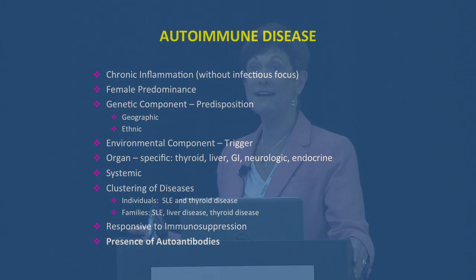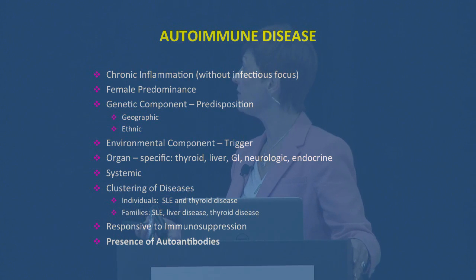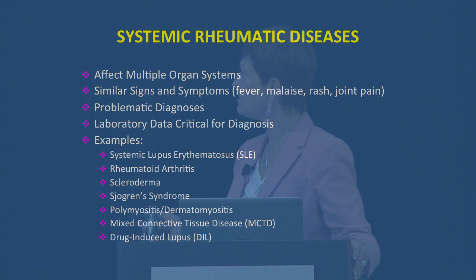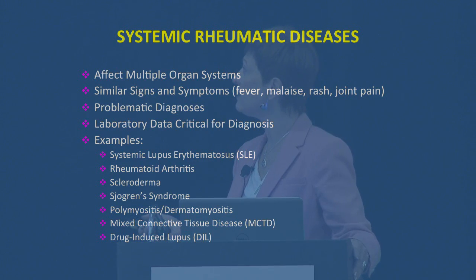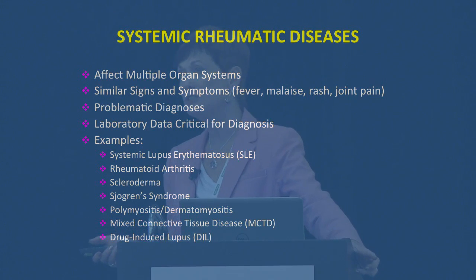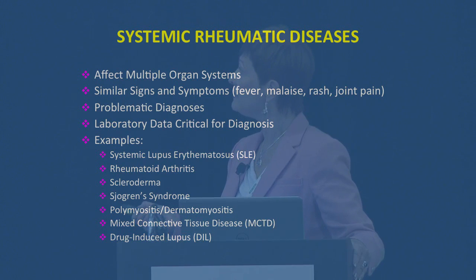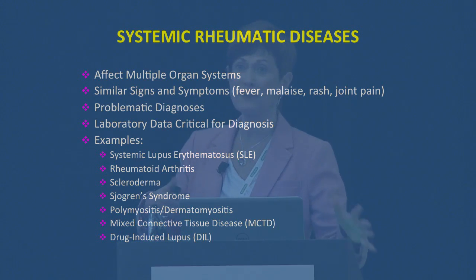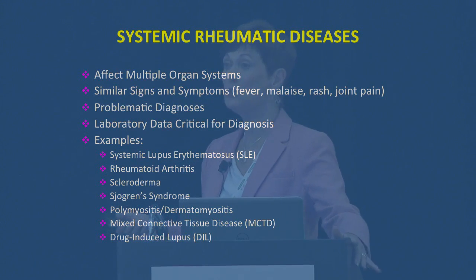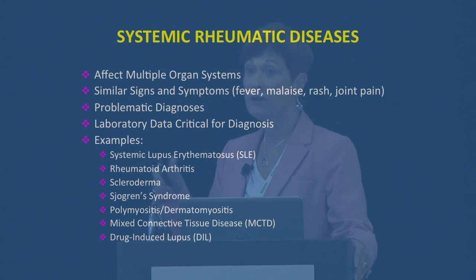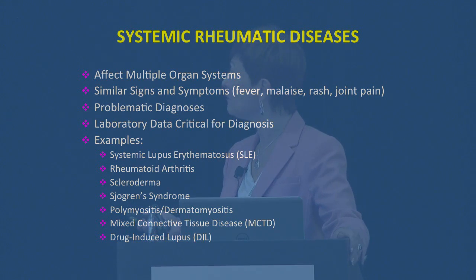And for our purposes, they have autoantibodies which we can use to our advantage. The systemic rheumatic diseases are also a very interesting sort of thing. They can affect multiple organ systems — you can have signs in the brain, signs in the liver, signs in the peripheral blood. But all these signs and symptoms throughout the different diseases are very, very similar: fever, malaise, maybe a rash, maybe some joint pain. So they are problematic diagnostic problems for the rheumatologist and internist, and the laboratory data is really critical for the diagnosis.